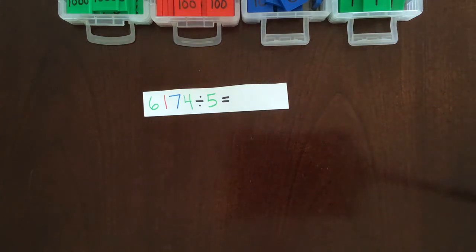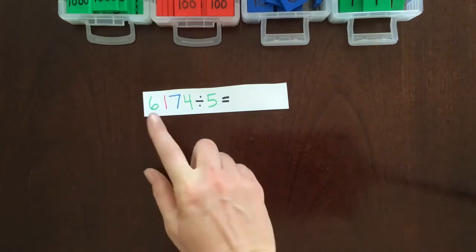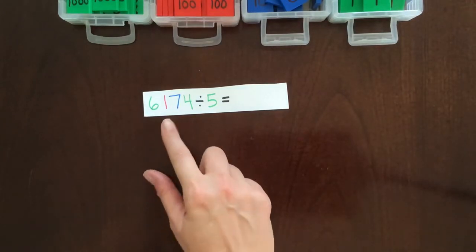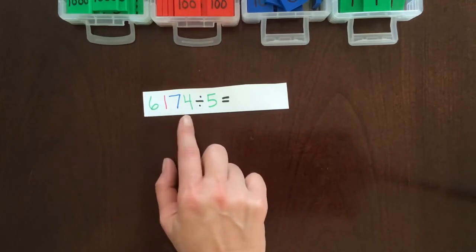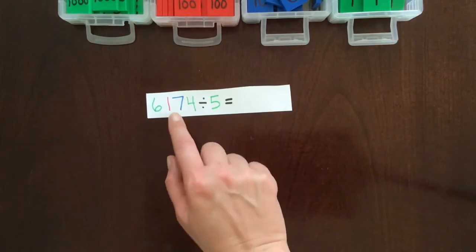Today I'm going to show you how to do dynamic division using the Montessori stamp game. This is division with a remainder. So we have 6,174 divided by 5 and we'll start by building our dividend.